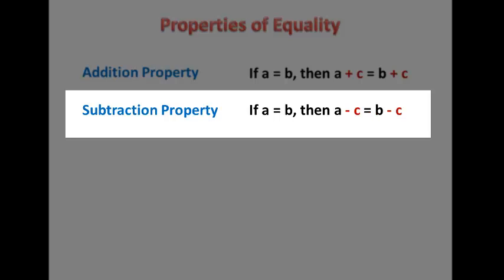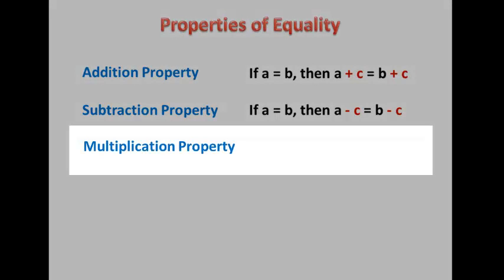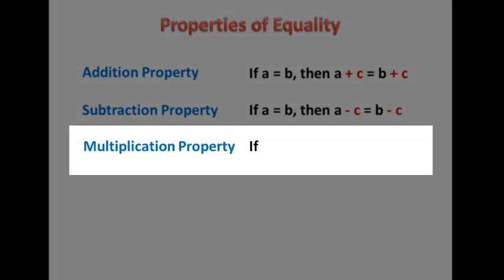and then if we subtract C from A, then we have to subtract C from B as well. And then the multiplication property says that if A equals B,